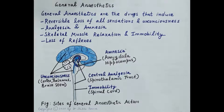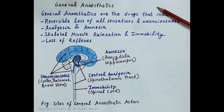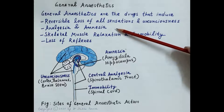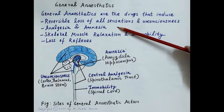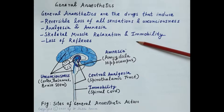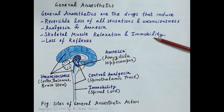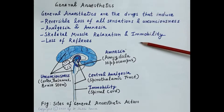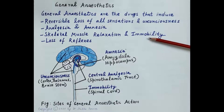In today's session we'll talk about general anaesthetics in brief and discuss the stages of general anaesthesia. All general anaesthetics are CNS depressants — drugs that induce reversible loss of all sensations and produce unconsciousness. They produce analgesia and amnesia, which is the loss of memory. These drugs also induce relaxation of skeletal muscles causing immobility, and produce loss of all somatic and autonomic reflexes. These are the cardinal features of general anaesthetics.